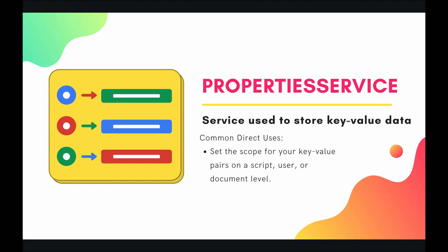This service is used to store simple key-value data. You can think of it as your own personal internal NoSQL database built right into Apps Script. If you do have any simple key-value data, you won't have to go and configure some external database, which will take a lot of time and resources. You can just store that simple key-value data within the property service, which is already built out by Google.